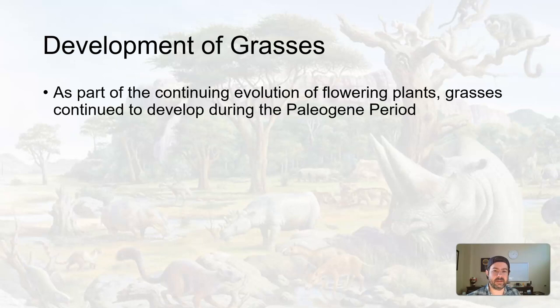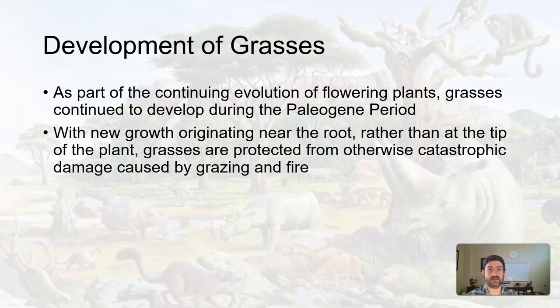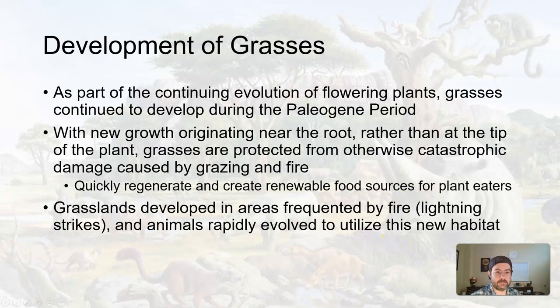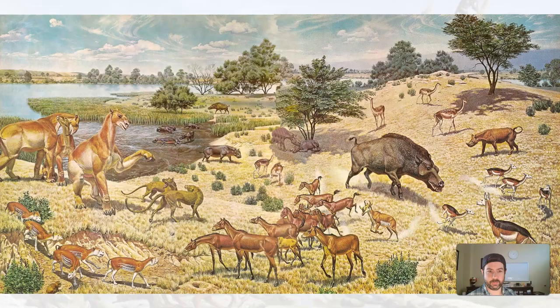As part of the continuing evolution of flowering plants, grasses developed. Grasses grow not from the ends but more from the roots, which actually helps protect them from damage caused by wildfires or grazing — if things eat the grass, the roots are still there and that's where it grows from. Grasslands developed in areas where there was wildfire, usually caused by lightning, but animals also rapidly evolved to take advantage of this new habitat and food source. The mammals that began grazing on grasses included two-toed hoofed animals like antelopes, deer, cattle, and sheep, and one-toed mammals like rhinoceros and horses.